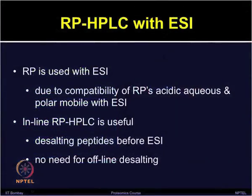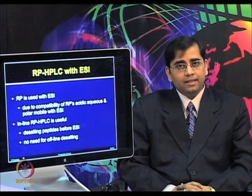In proteomics, one can use ESI and liquid chromatography in-line, so samples can be pre-fractionated and further analyzed using mass spec. The in-line reverse phase HPLC is very useful because it can desalt peptides prior to ionization in ESI. There is no need for doing separate offline desalting and pre-fractionation; it can focus peptides from dilute samples into narrow chromatographic bands and also enhances sensitivity.